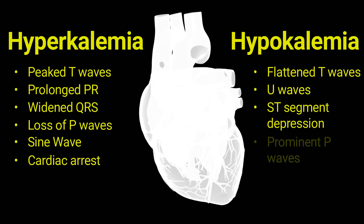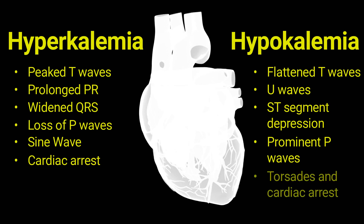As hypokalemia worsens, the P waves may become taller and more prominent, often exceeding 2.5 mm in height — a change known as P wave tallness. Hypokalemia significantly elevates the risk of life-threatening arrhythmias, including torsades de pointes, a specific type of irregular heart rhythm. These dangerous arrhythmias have the potential to lead to cardiac arrest if left unaddressed.